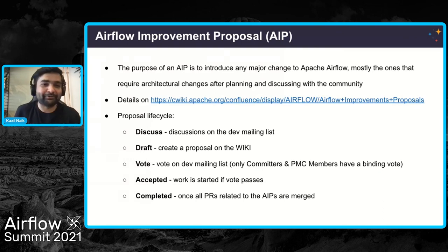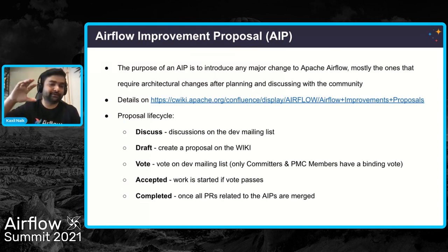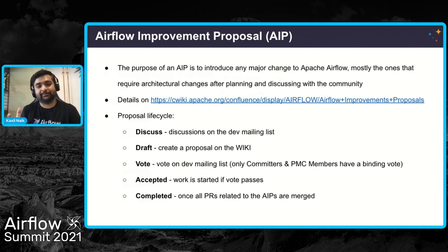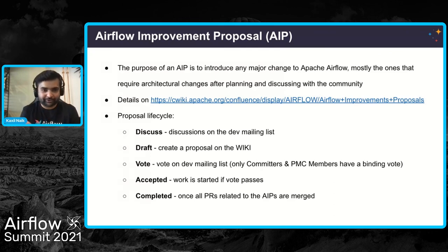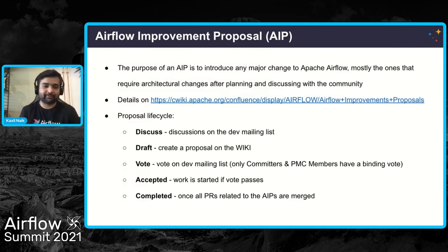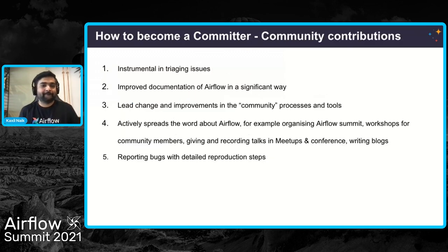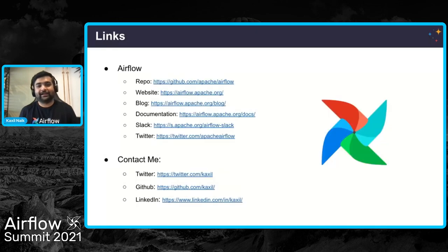Last but not least, the Airflow improvement proposal. Anyone can create one — it's a document where you describe a major architectural change in Airflow. The whole aim is that we as a community discuss those changes on the mailing list. Discussion starts on the mailing list, you create a draft on the confluence page linked there, voting happens on the mailing list, and PMC members and committers all have a binding vote. Once the vote passes, you can start the work, and once all PRs related to the AIP are merged, you're complete.